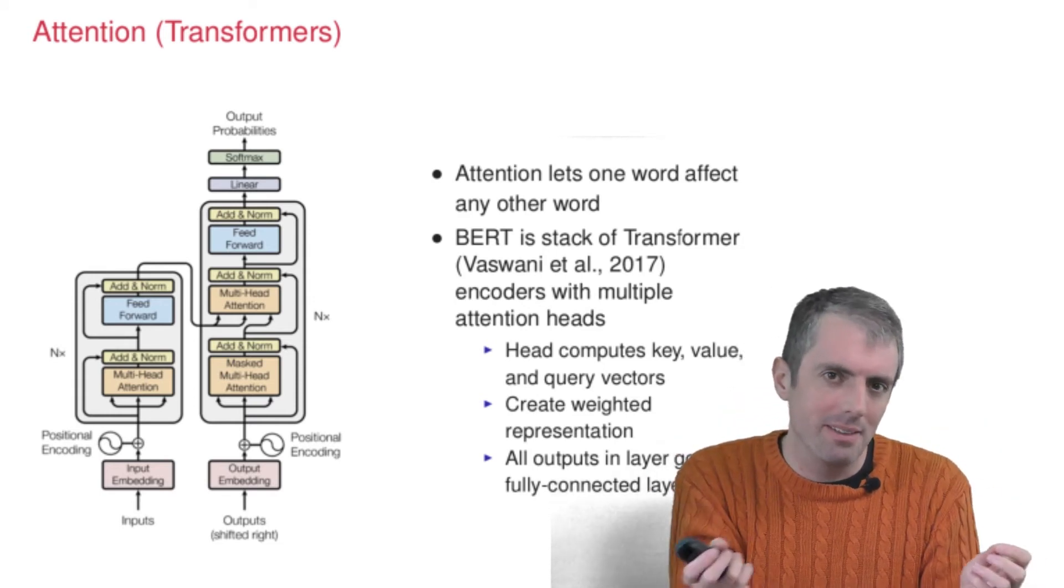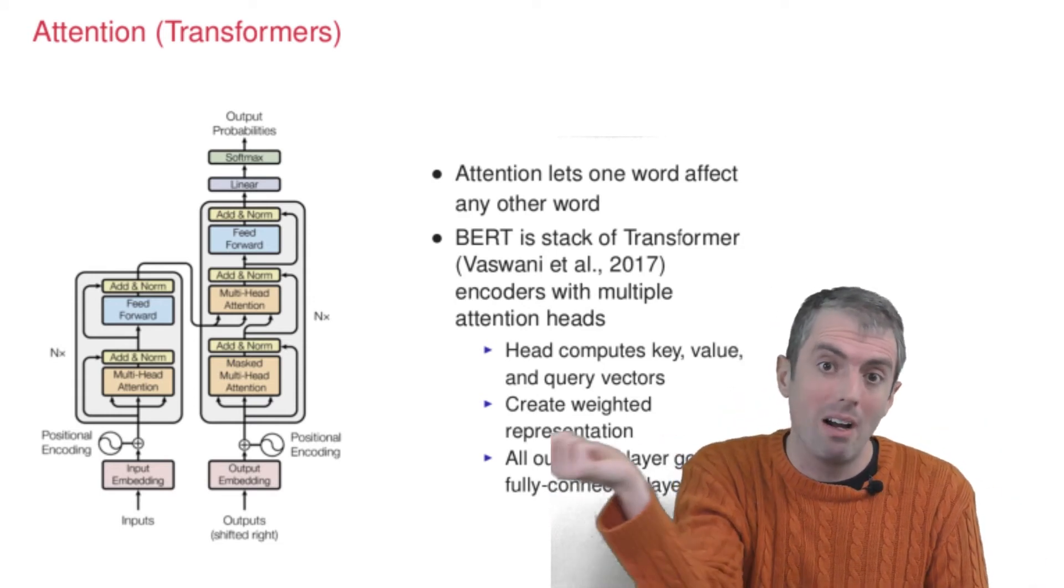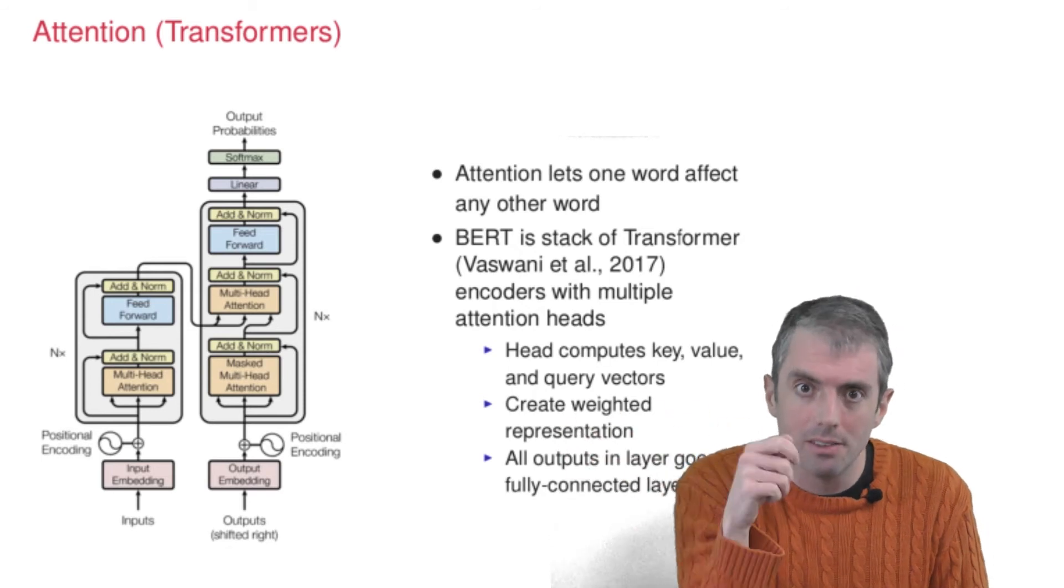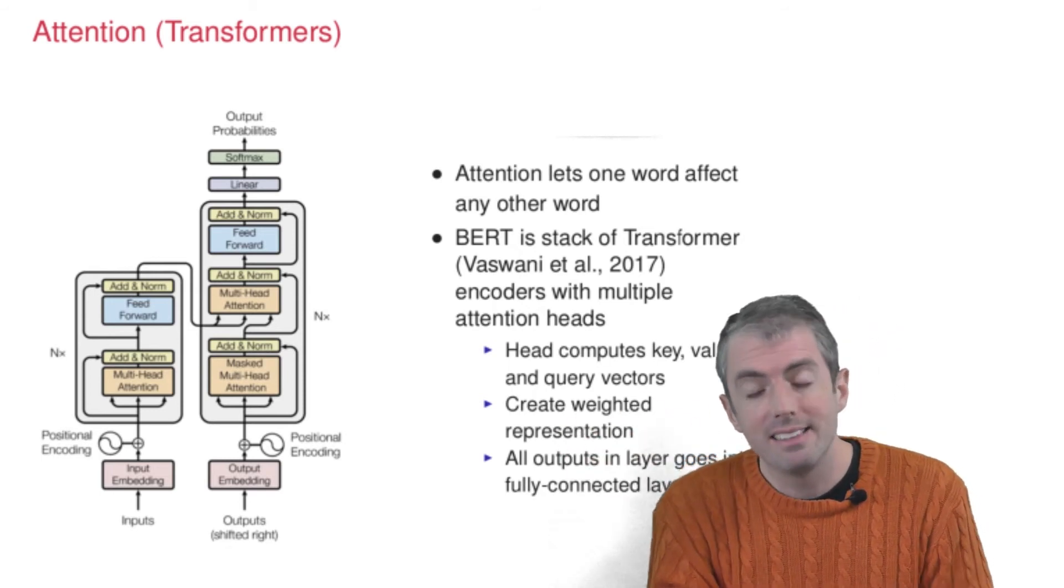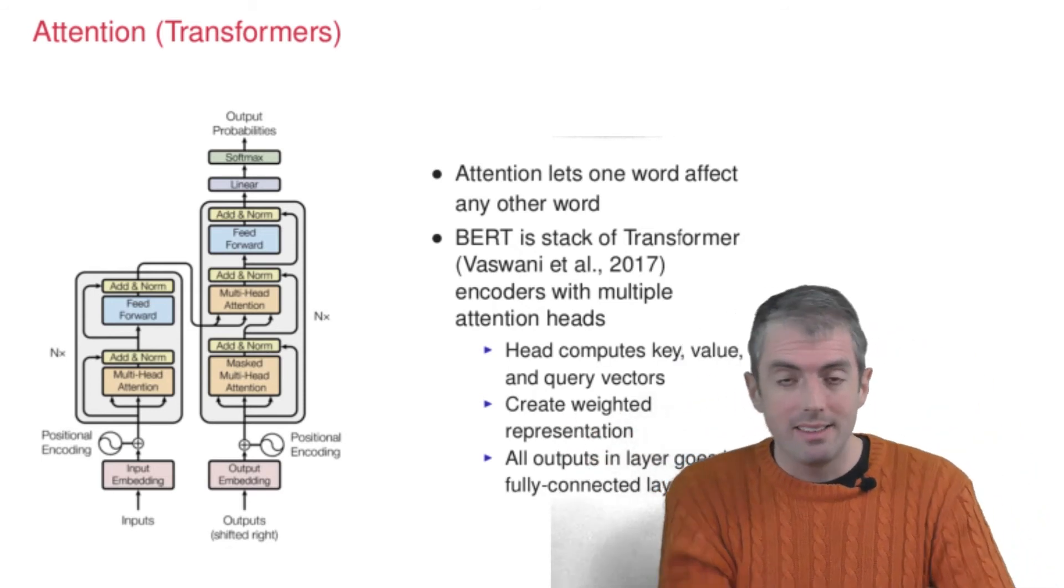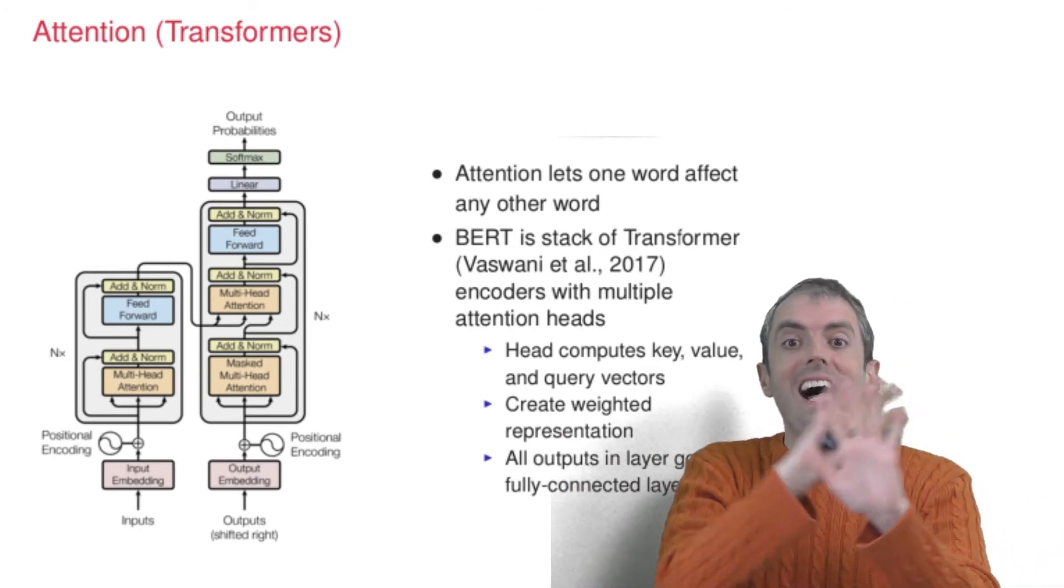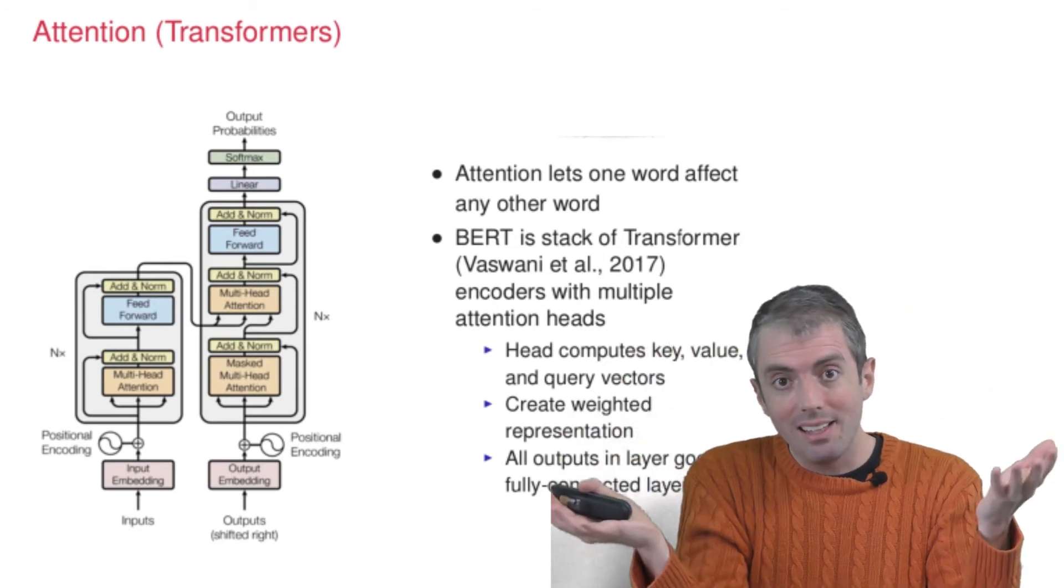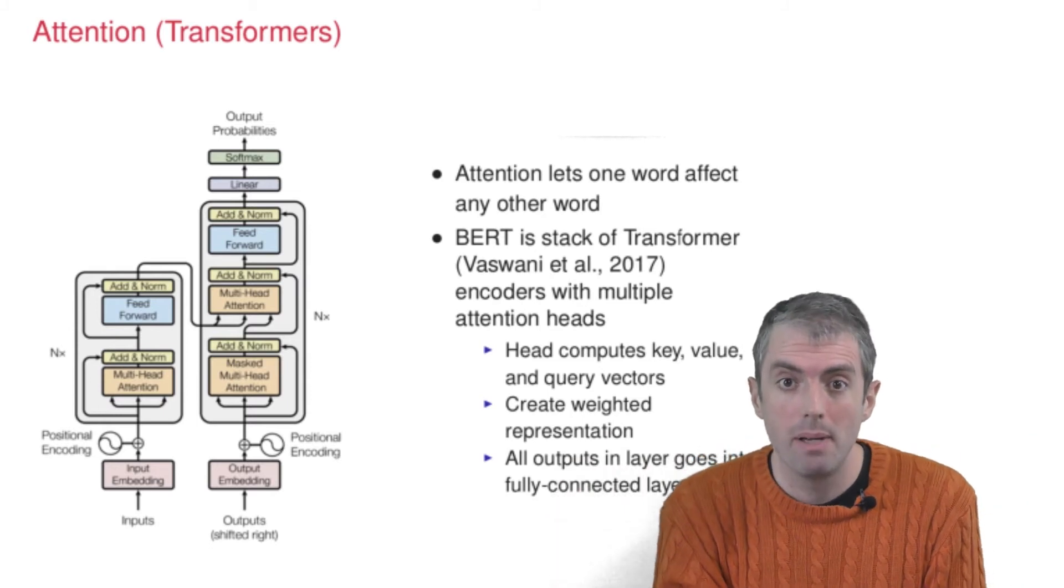So instead of in a bi-LSTM where just the immediate neighbors have an effect on the word, of course, you can have longer range dependencies, but that requires the LSTM to keep everything that it needs around, passing it through the memory cells from cell to cell to cell. Instead, the transformer has this attention vector that lets you look over the entire sentence, and this allows you to capture longer range dependencies.